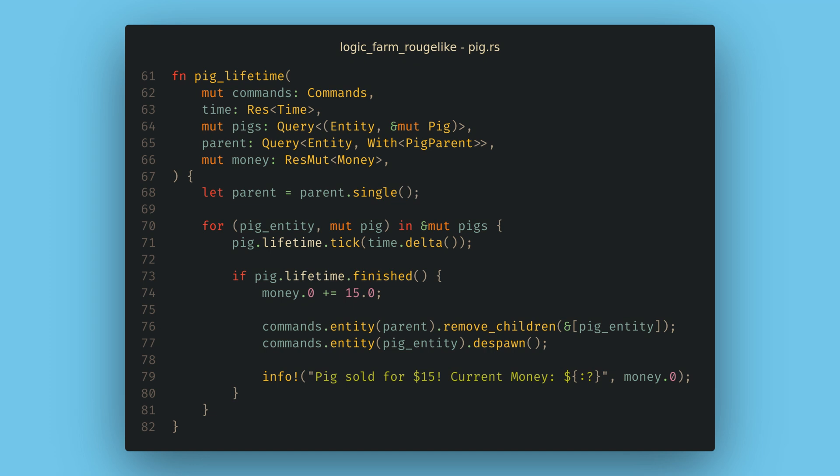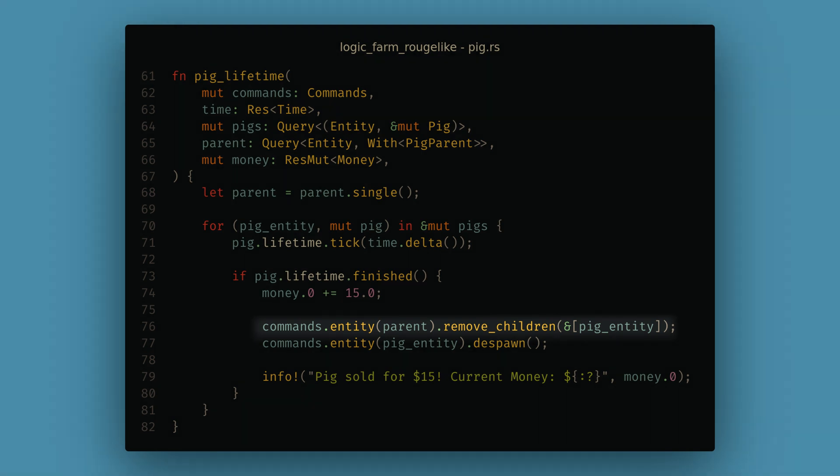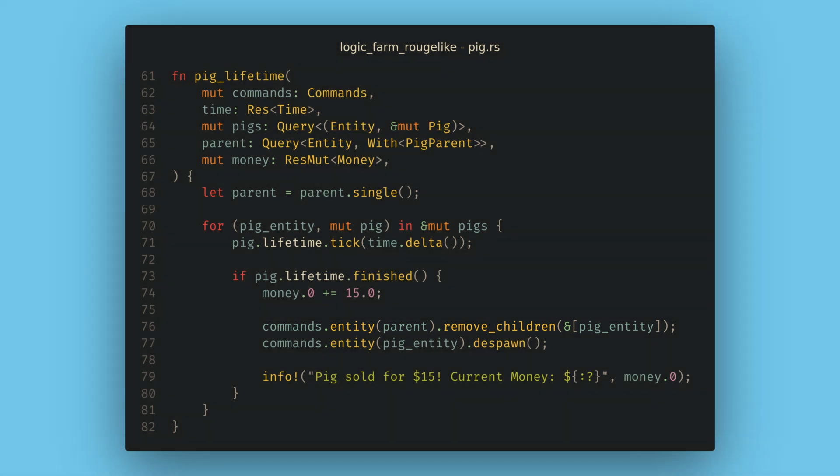Next we need to do one more touch up where we de-spawn the pigs. Here, we need to manually tell Bevy to remove the child entity from the parent. Nothing will really break if we don't call remove children here, but the parent will always have the dead entities in the children's list, and this will grow the list into a kind of memory leak each time we create and de-spawn a new child. And if we ever iterate over the children, we'll have non-existent entities in the list.